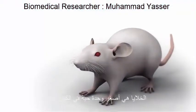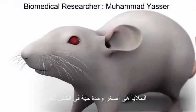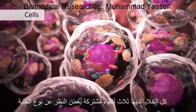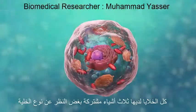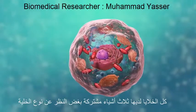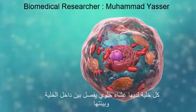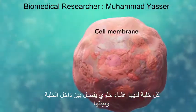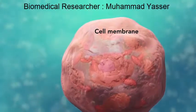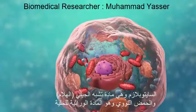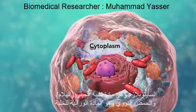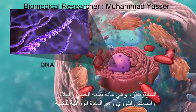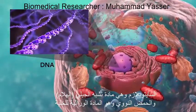Cells are the smallest living units of an organism. All cells have three things in common, no matter what type of cell they are: a cell membrane, which separates the inside of the cell from its environment; cytoplasm, which is a jelly-like fluid; and DNA, which is the cell's genetic material.